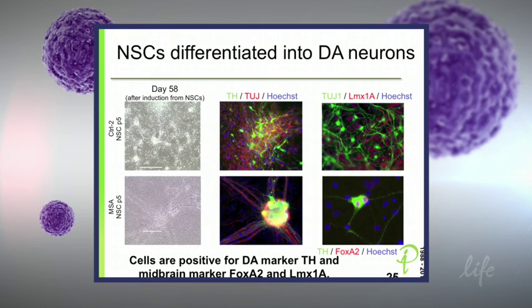These are our attempts to differentiate those cells into mature neurons. We have a control line and an MSA line. Looking at day 58, we see tyrosine hydroxylase, TUJ1, and also LMX1A and FOXA2 as midbrain transcription factors. This is the multiple system atrophy line, so we can do it in controls but we also can do it in disease lines.